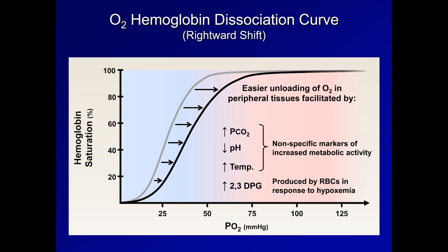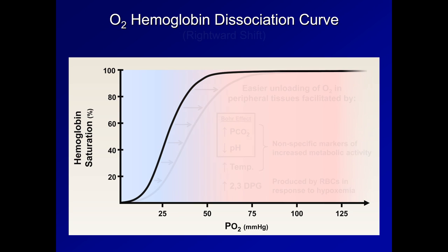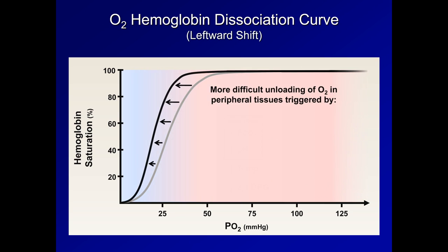Although it is only trivia unless you're studying to be a biochemist, the tightly linked effects of pCO2 and pH are sometimes referred to as the Bohr effect, named after the Danish physiologist Christian Bohr, himself father to the famous physicist Niels Bohr. And the curve can also be leftward shifted, essentially by the opposite of things which cause a rightward shift.